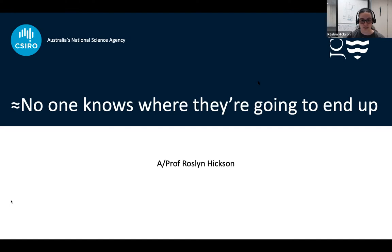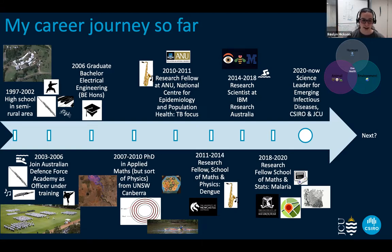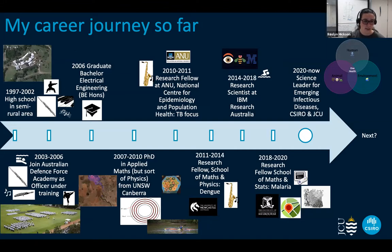I'll talk you through that a bit more. So this is basically my life on a slide — I've condensed it a bit, as you can imagine. I started out high school in a semi-rural area in New South Wales. I didn't realise until I moved to Canberra for university that it wasn't normal to have pigs and chickens and occasional cattle on the school grounds. My hobbies are also throughout here, which is why I called it my life on a slide. In high school, I was very into karate, flute, and piano.